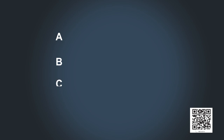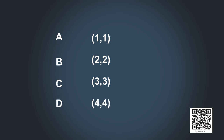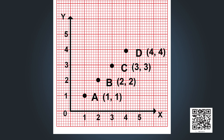Now we will plot a few points A, B, C, and D with coordinates (1,1), (2,2), (3,3), and (4,4) respectively. Plotting each of these points, we can see that all of them lie on a line. The graph obtained by joining the plotted points is a straight line. Such graphs are called linear graphs.